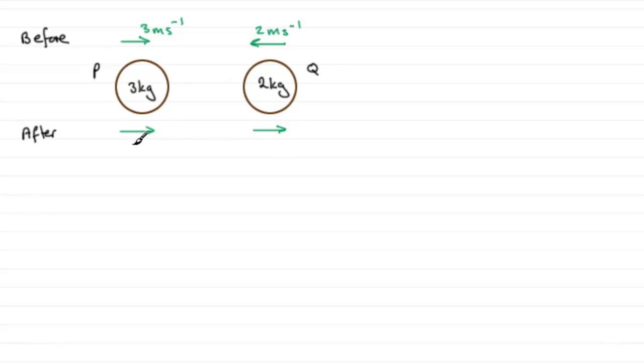Let's call this velocity here the final velocity for P and this one the final velocity for Q. Now we're told that they move away and the difference in their speeds is 1 meter per second, so I can already establish one equation.